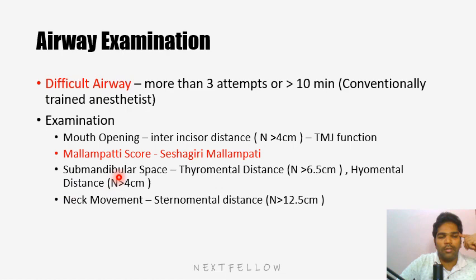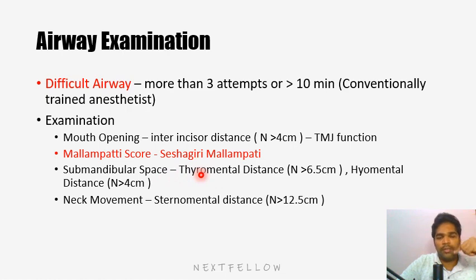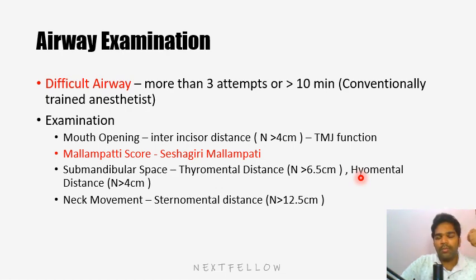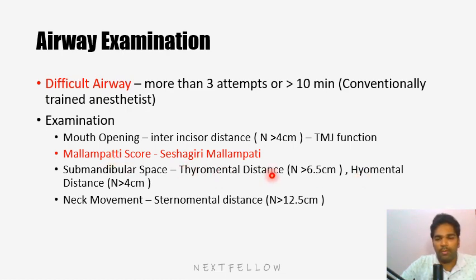The first thing to assess is mouth opening. This is measured by the inter-incisor distance — the distance between the upper and lower incisor — which should be more than 4 centimeters, or two fingers. We ask the patient to take their two fingers and insert them into their mouth. If they are able to do that, the temporomandibular joint is functioning normally. Sometimes patients may have temporomandibular ankylosis where the joint becomes fused and they cannot open the mouth.